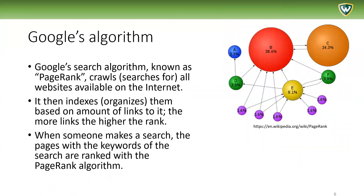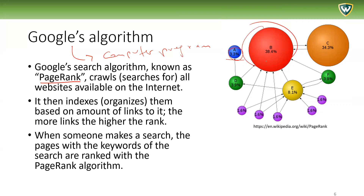Let's look at the example of Google's algorithm, namely Google's search algorithm known as PageRank. PageRank is Google's algorithm for the google.com website, which crawls and searches for all websites available on the internet. Google.com is a computer program, a computer software as well as a company. This algorithm indexes and organizes all the websites available on the internet, then ranks them based on the number of links to each website. The more links, the higher the rank. For example, website A with only three links gets a value of 3.3%, while website B with 38 links gets a much higher score.